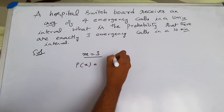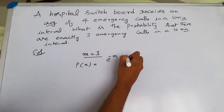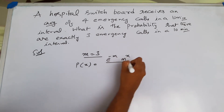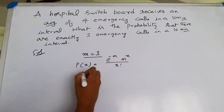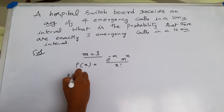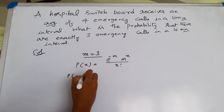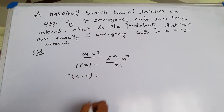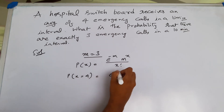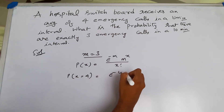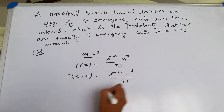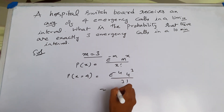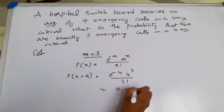The Poisson formula is e to the power minus m, multiplied by m to the power x, divided by x factorial. For x equal to four, substituting gives e to the power minus four, multiplied by four cubed, divided by three factorial, which gives us 0.195.